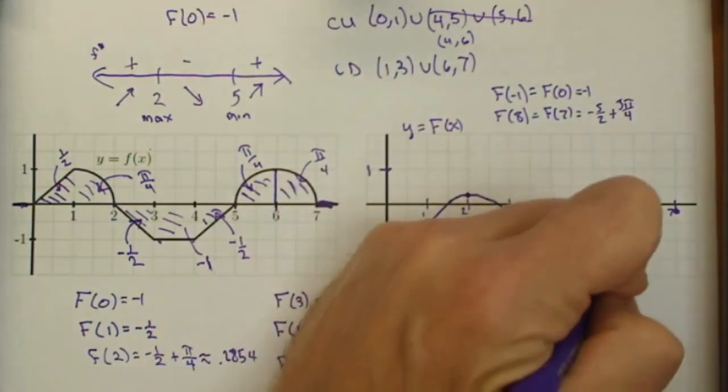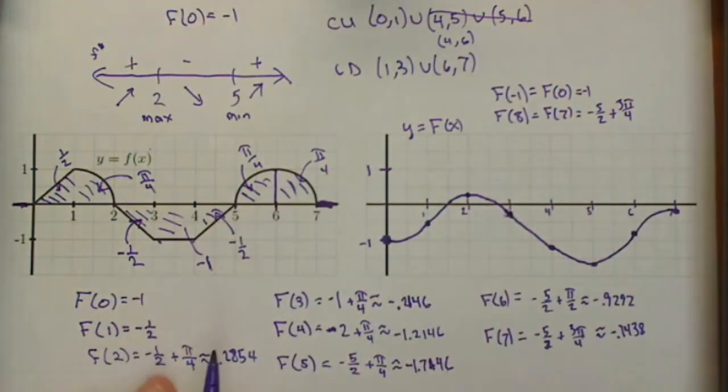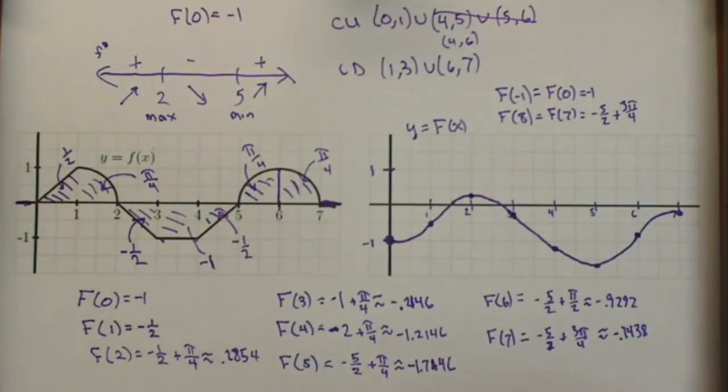And then finally from 6 to 7, we have concave down. Now this was our graph with the initial condition f of 0 equals negative 1.